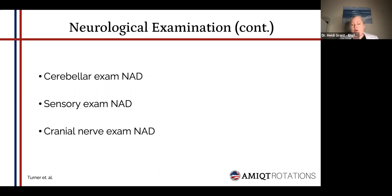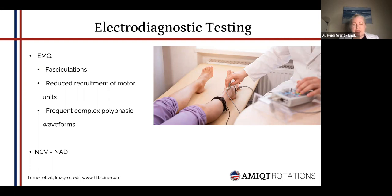Some pertinent negatives during the examination: the cerebellar exam was normal with no abnormality detected. Sensory exam was normal. Cranial nerve exam was normal. Electrodiagnostic testing showed on EMG: fasciculations, reduced recruitment of motor units, and frequent complex polyphasic waveforms. But the nerve conduction velocity test was normal with no abnormality detected.